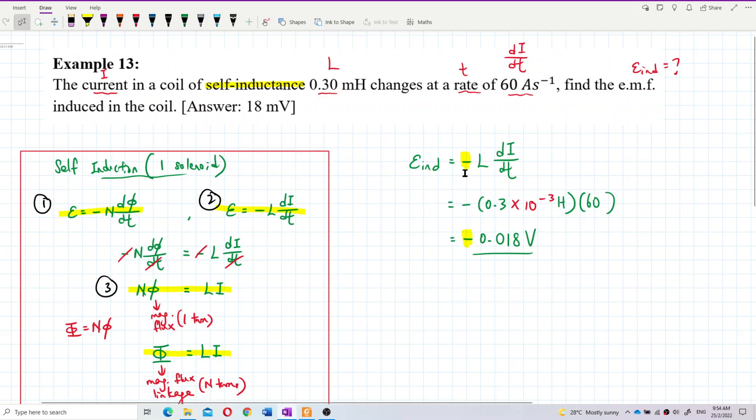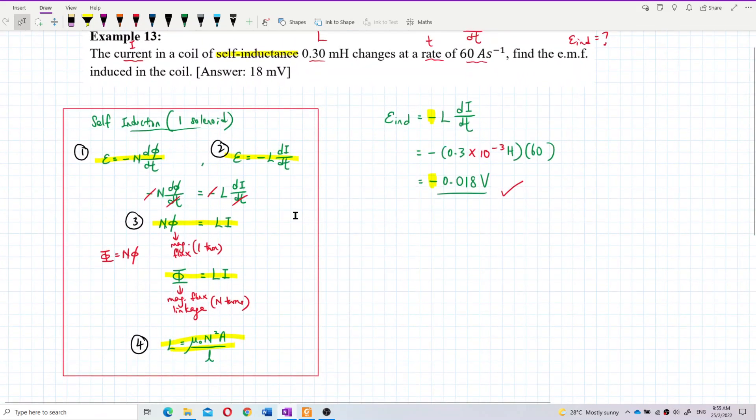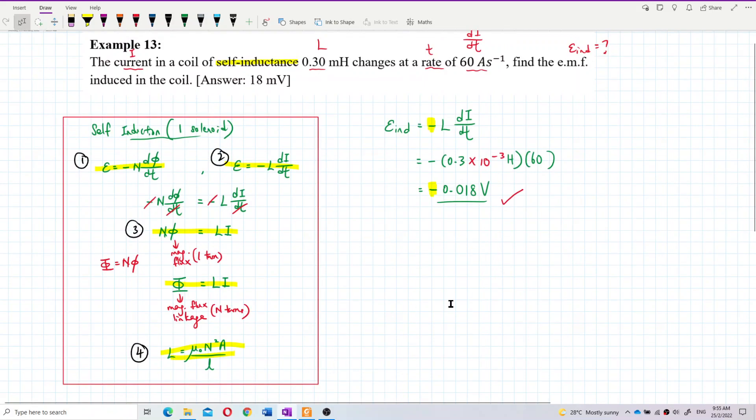Since the equation has a negative sign, we shouldn't just throw it away. The negative means back EMF - it's about the direction or polarity changes. So 0.018 is 18 millivolt. That's the formula. Hope you understand. Thank you.